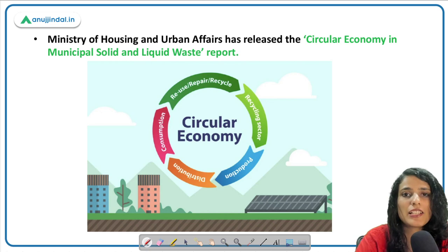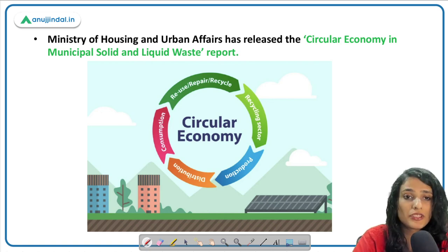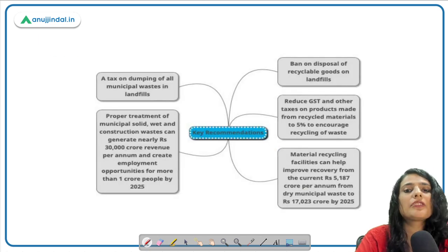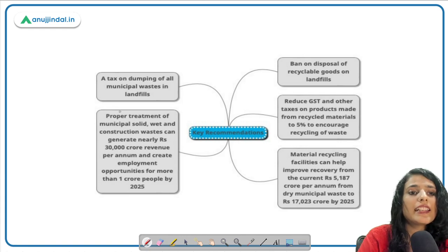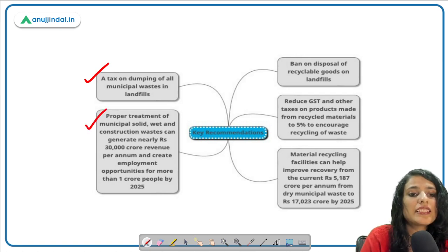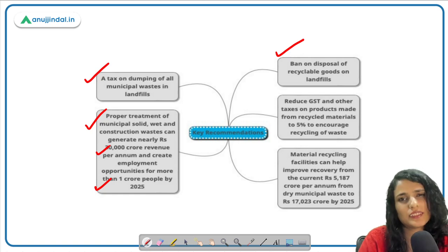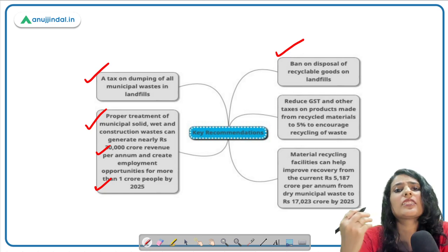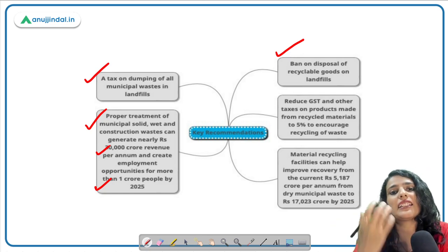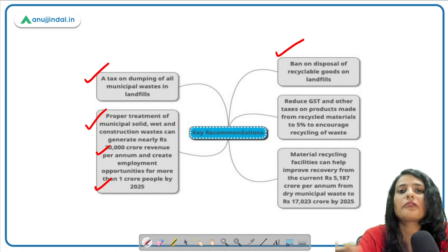The concept of circular economy came to reduce resource use, dependency on imports, especially in production value chains. It is becoming very popular in the electronic waste industry. Key recommendations of the report include: a tax on dumping of all municipal waste in landfills; proper treatment of municipal solid, wet, and construction waste can generate thirty thousand crore revenue per annum and create employment for one crore people. There is also a recommendation for a ban on disposal of recyclable goods in landfills, as they pollute air, release toxic emissions harmful to nearby residents, and pollute groundwater.